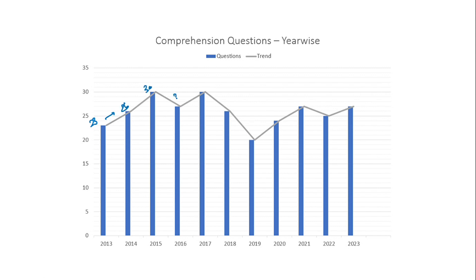In 2019 the graph goes down and only 20 questions were asked that year. Then again the graph is increasing: 24, 27, 25, and in 2023 they asked 27 questions. So we can expect questions from reading comprehension anywhere from 20 to 30.